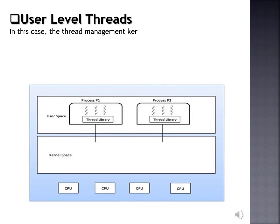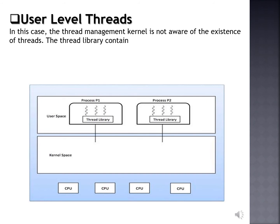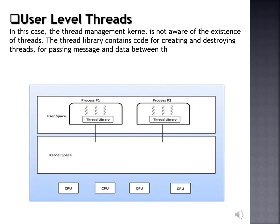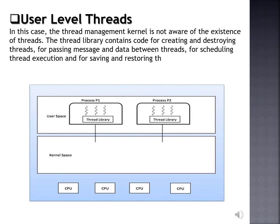What are user level threads? In this case, the thread management kernel is not aware of the existence of threads. The thread library contains code for creating and destroying threads, for passing messages and data between threads, for scheduling thread execution, and for saving and restoring thread context. The application starts with a single thread.